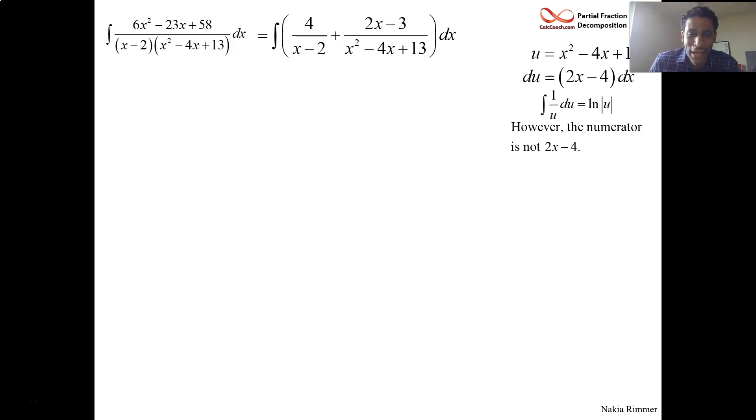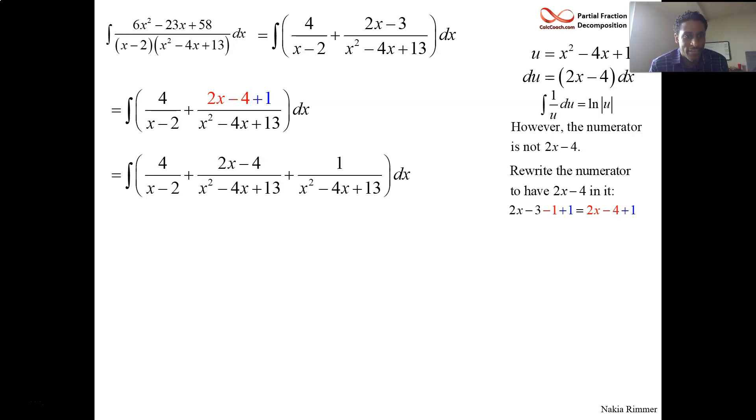How can you turn 2x minus 3 into 2x minus 4 legally, algebraically? That's our goal. And so the way we're going to do it is to take away 1 to turn it into 2x minus 4. And then to balance things out, we have to also then go ahead and add 1. So we have our 2x minus 3. We take away 1 to make it 2x minus 4. But we add 1 back on to make it back into what it was originally. And so it's just a rewriting of the numerator conveniently. Why is that so convenient? Because now, we can take it in the 2x minus 4 plus 1 are two separate guys. We can break it up to be 2x minus 4 on top of our denominator and 1 on top of our denominator.